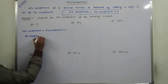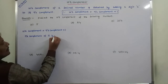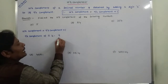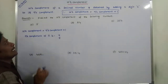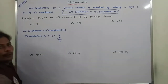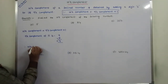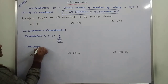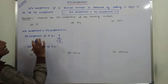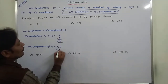5 can be subtracted from 9. There is only a single digit, so this digit is subtracted from 9, giving us 4. Therefore, the 10's complement of 5 is: 9's complement of 5 is 4, plus 1, which equals 5.